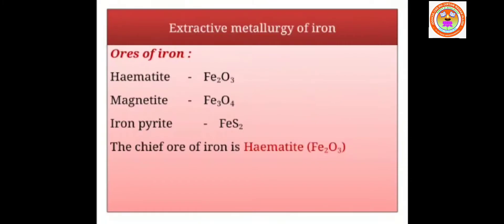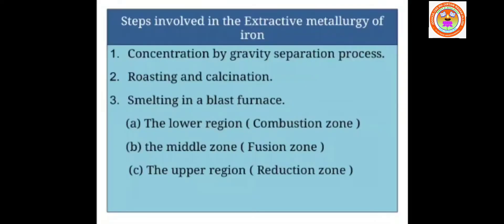Since hematite is an oxide ore, it is separated by gravity separation process. The three main steps involved in the extractive metallurgy of iron are: concentration by gravity separation process, roasting and calcination, and smelting in a blast furnace.